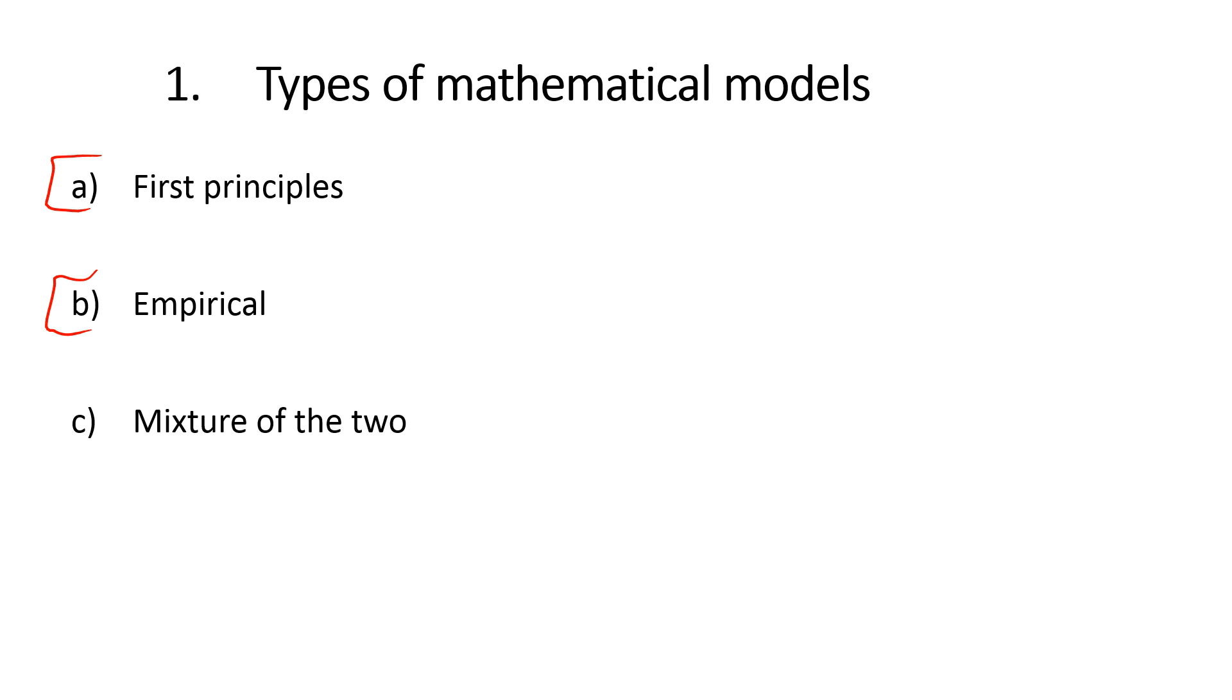Next one is empirical. That's purely from data. All of the modeling is unstructured, most likely, and you're determining the form of the model from the data. You can also have a mixture of the two, first principles and empirical.